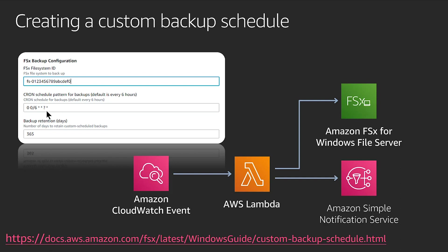This could be a daily, weekly, or monthly backup. When the CloudWatch event is triggered based on the cron expression, an AWS Lambda function is invoked. The Lambda function calls the Create Backup API on Amazon FSx for Windows File Server, which initiates a backup of your file system. The Lambda function also describes existing backups and deletes any backups that are outside the retention period configured as a parameter in the CloudFormation template. Lastly, it sends a notification using Amazon Simple Notification Service in case you'd like to be notified when backup operations happen.